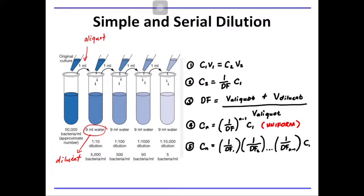First is C1V1 equals C2V2. Second is C2 equals 1 over dilution factor times C1. Third is the formula for the dilution factor. And fourth and fifth formula are formulas for uniform serial dilution and non-uniform serial dilution.